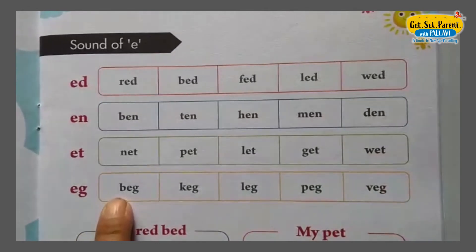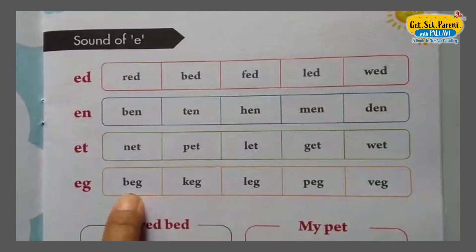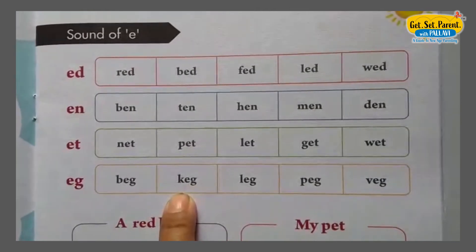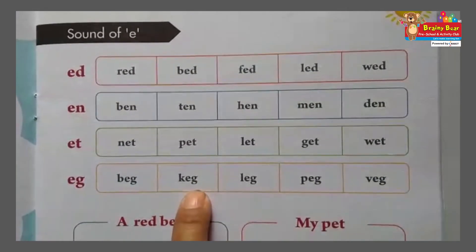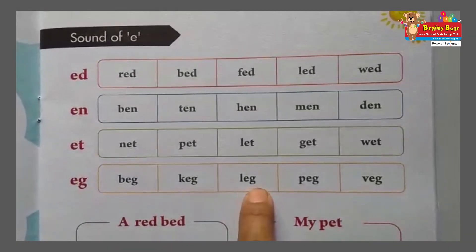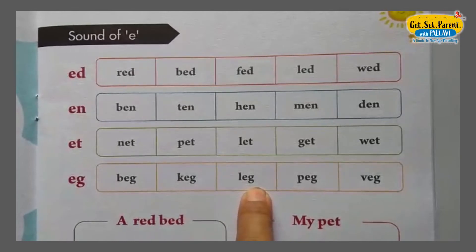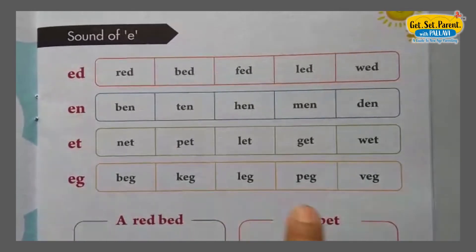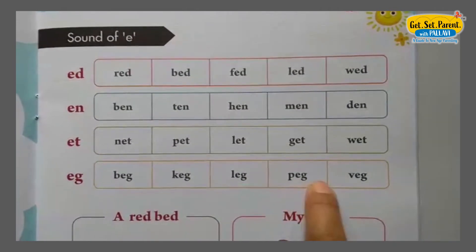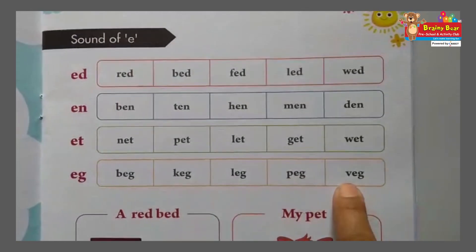Next: B, E, G. Phonic of B: B. Phonic of E: E. Phonic of G: G. B-E-G. Next: K, E, G. Phonic of K: K. Phonic of E: E. Phonic of G: G. K-E-G. Next: L, E, G. Phonic of L: L. Phonic of E: E. Phonic of G: G. L-E-G. Next: P, E, G. Phonic of P: P. Phonic of E: E. Phonic of G: G. P-E-G.